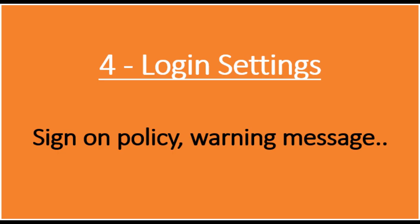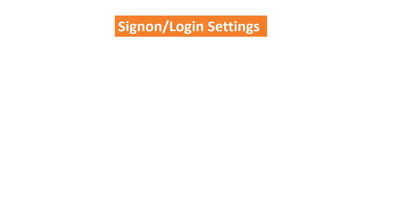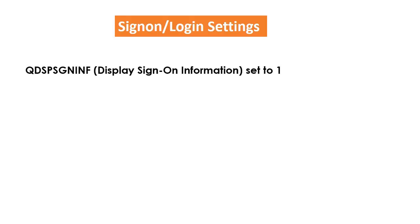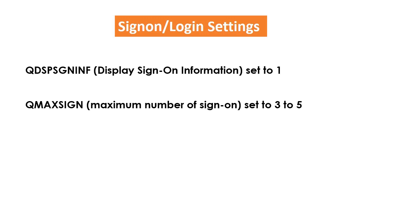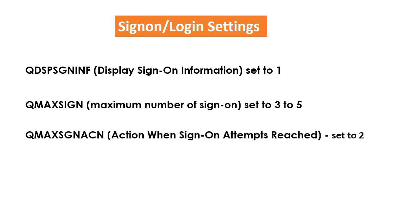Point number 4: Sign-on or Login Settings. The display sign-on information system value determines whether the sign-on information display is shown after signing on. The information includes last login date and time and days remaining for the password to expire. Ensure the value is set to 1. Ensure QMAXSIGN — the maximum number of sign-on attempts — is set to either 3 or 5 as defined per policy. Also, make sure QMAXSGNACN — the action to be taken when unsuccessful attempts are reached — is set to 2, which disables the user profile.